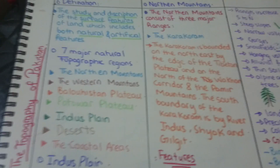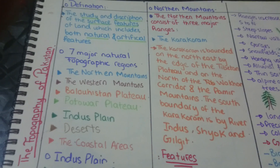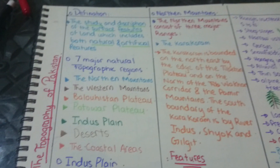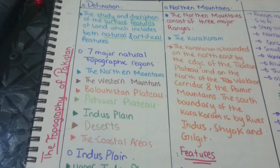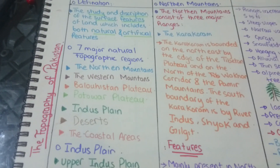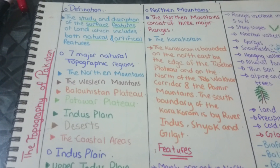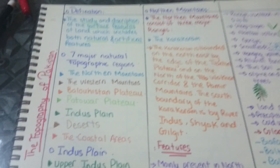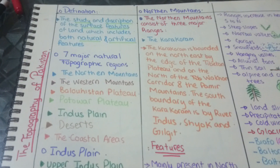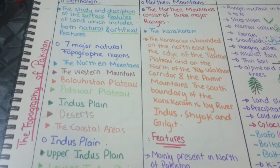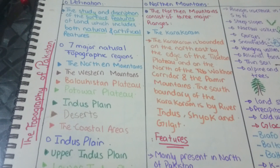There are three major ranges in the Northern Mountains: the Karakoram, the Hindu Kush, and the Himalayas. The Karakoram is bounded on the northeast by the edge of the Tibetan Plateau, on the north by the Wakhan Corridor and the Pamir Mountains, and on the south by the rivers Indus, Shyok, and Gilgit.